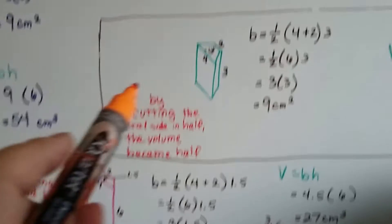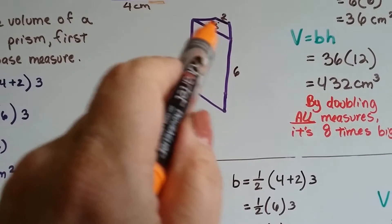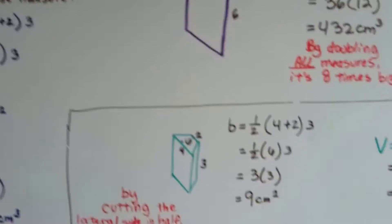Well, what happens if we cut this height in half, and we keep the 6, but instead of a 3 for the trapezoid height, it's only 1 and a half?